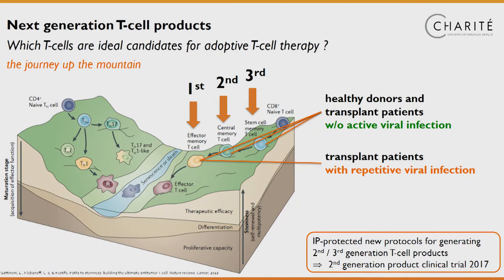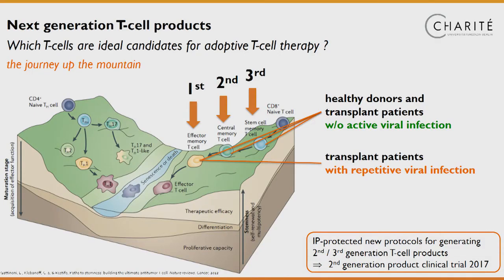When we look at patients with repetitive viral infections, we see that in our first-generation T-cell product we have those so-called effector memory T-cells, whereas in healthy donors and transplanted patients without viral infection, we have cells with much better functionality, like the central memory cells or the memory stem T-cells. Our aim is to generate new protocols to climb up this mountain and generate second or even third-generation products.